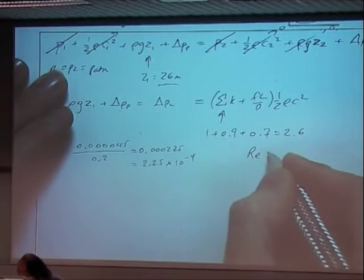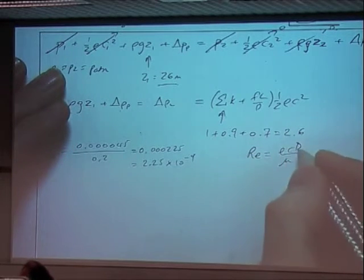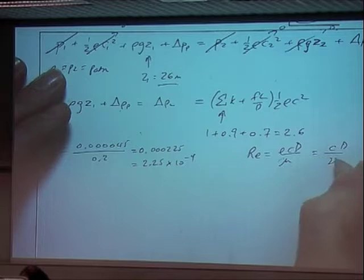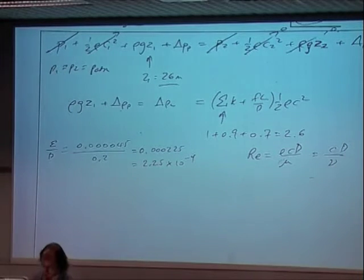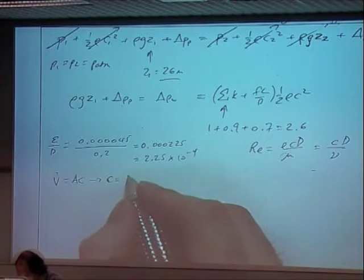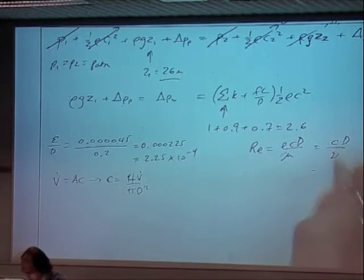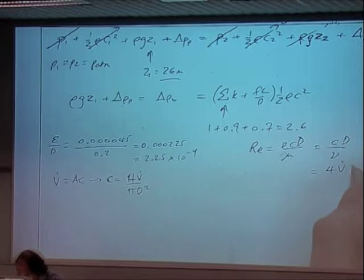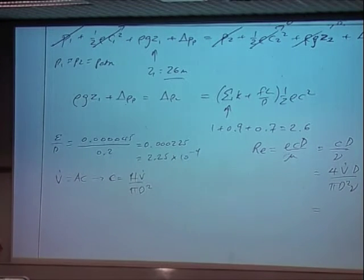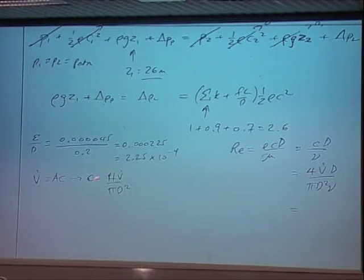And we know our Reynolds number, we know that, we know this form, rho cd upon mu, but we haven't been given mu, we've been given nu. So we know that cd upon nu, and so, and we know that c, v dot equals ac, so c equals 4v dot over pi d squared. So we can stick that in here, we've got 4v dot d over pi d squared nu. Everybody know where I get that from? We've got v dot equals a times c, a is pi d squared upon 4, and so we have c equals 4v dot over pi d squared. That's a 4, not an h.